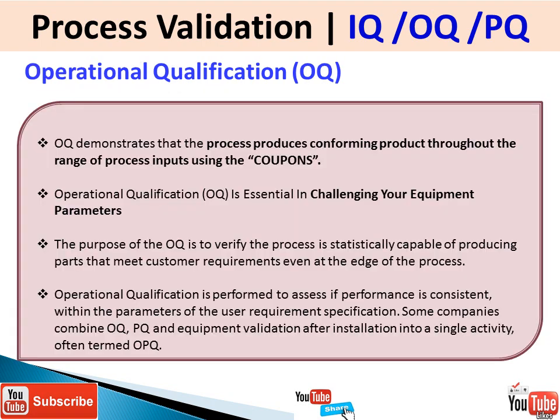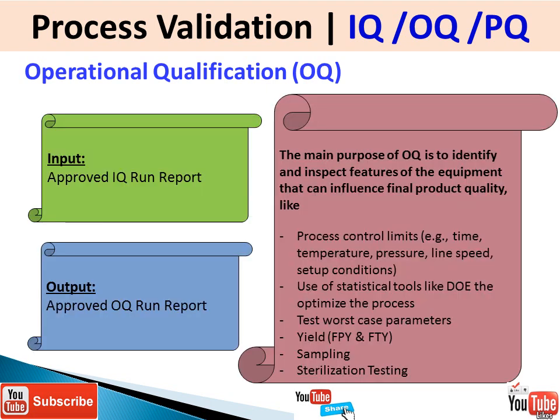Once installation is established, the next step is operation qualification. OQ demonstrates that the process produces conforming products throughout the range of different process inputs. You vary input parameters like temperature and pressure settings to determine where the best results are obtained. The main purpose of OQ is to verify that the process is statistically capable of producing parts that meet customer requirements even at the edge of the process.